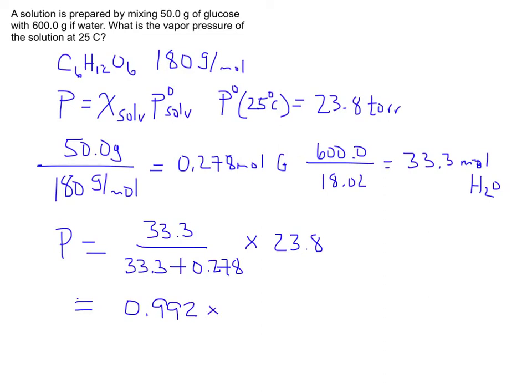Multiply that by 23.8, and I get 23.6 torr, 23.6 millimeters of mercury.